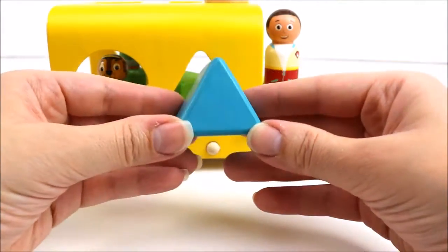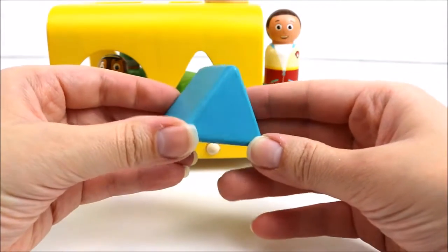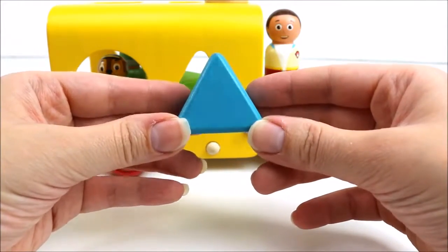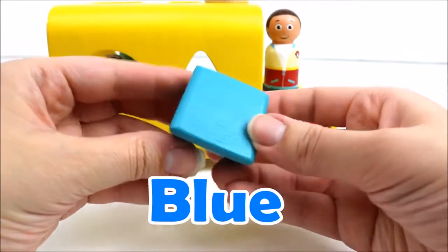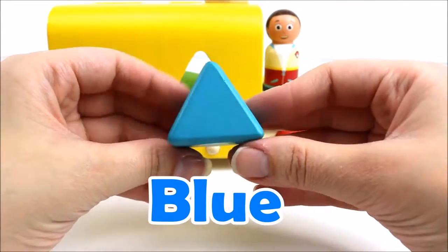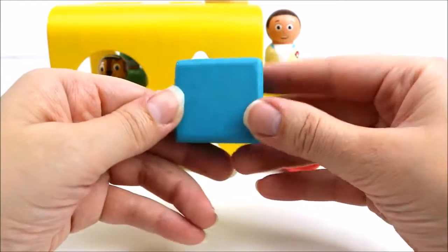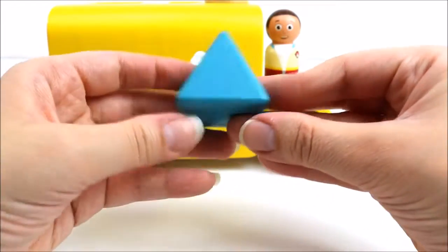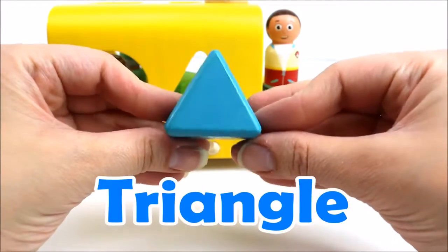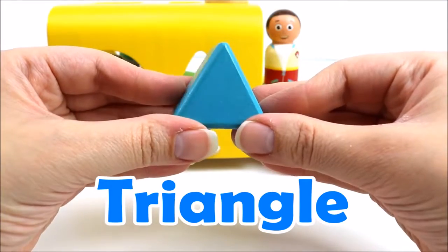Chase has got a shape with him. Can you guess the color? That's right, it's blue. And what kind of shape is it? It's a triangle, correct. Let's put it inside the bus.